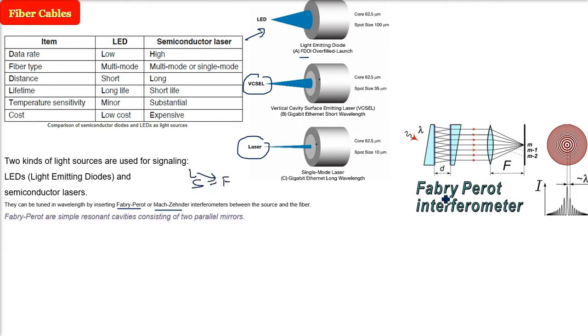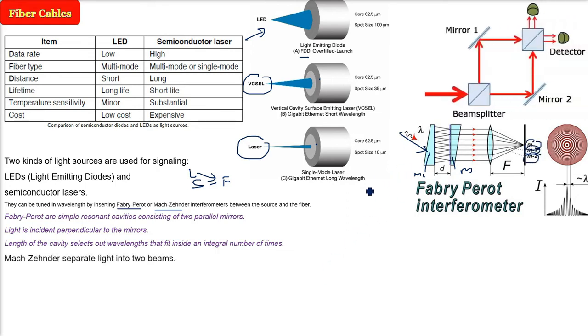How does the Fabry-Perot interferometer work? These are simple resonant cavities consisting of two parallel mirrors. You see these two mirrors. And the light is incident perpendicular to the mirrors. And the length of the cavity selects out wavelengths that fit inside an integral number of times. We are not going into the detail again, just to give you an idea.